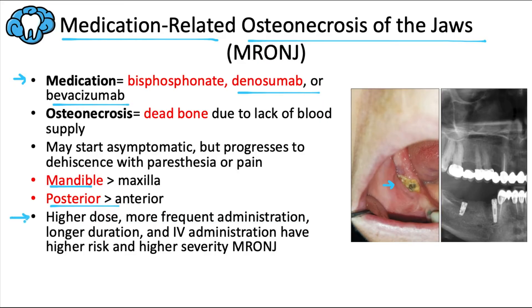In terms of the medication being administered, having a higher dose, more frequent administration, longer duration, and IV instead of oral administration have an increased higher risk of MRONJ and tend to result in more severe MRONJ. The risk factors of MRONJ include concomitant use of estrogen or glucocorticoids, as well as being over 65 years of age. And only the more potent nitrogen-containing bisphosphonates tend to cause MRONJ, so the ones that don't contain nitrogen are generally pretty safe.